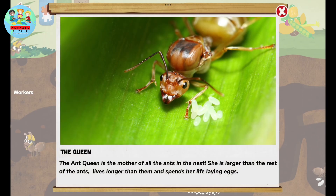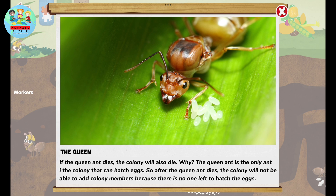The queen ant is the mother of all the ants in the nest. She is larger than the rest of the ants, lives longer than them, and spends her life laying eggs. If the queen ant dies, the colony will also die. The queen ant is the only ant in the colony that can lay eggs, so after she dies, the colony will not be able to add new members.